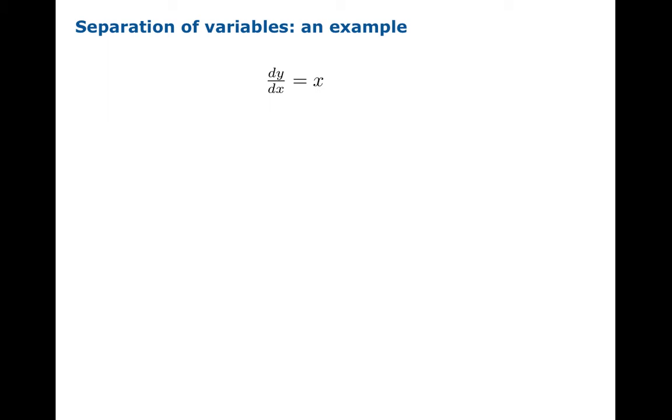The first step, if possible, is to separate variables. What this means is you formally treat the dy and the dx as separate entities that can be multiplied, and the rest of the differential equation you try to manipulate algebraically so that the two sides are completely distinct and variable dependent.